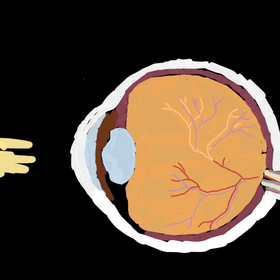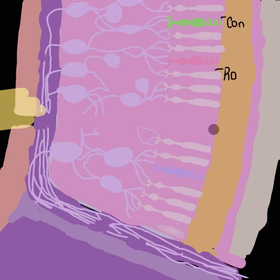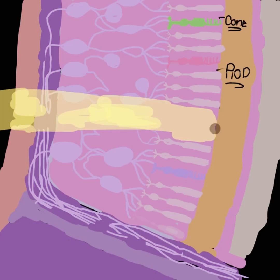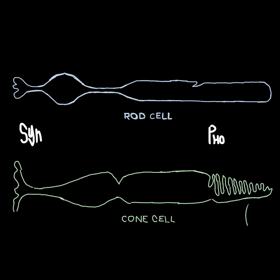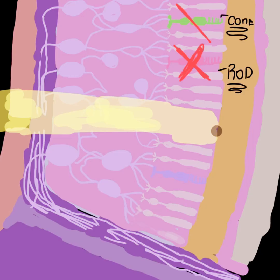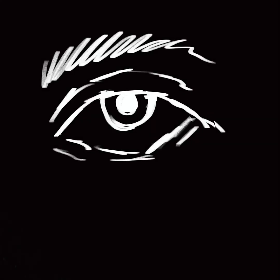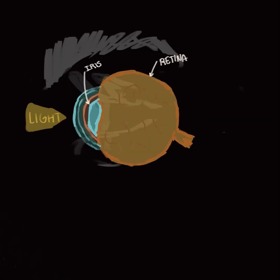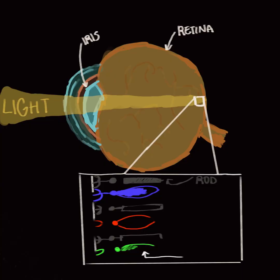In your eye's retina, which is part of your central nervous system, there are two photoreceptors that measure light. Rods are used in low light conditions. However, there is only one type of rod cell, and they don't detect color. Rather, it is the cones that help us see color in high light conditions.